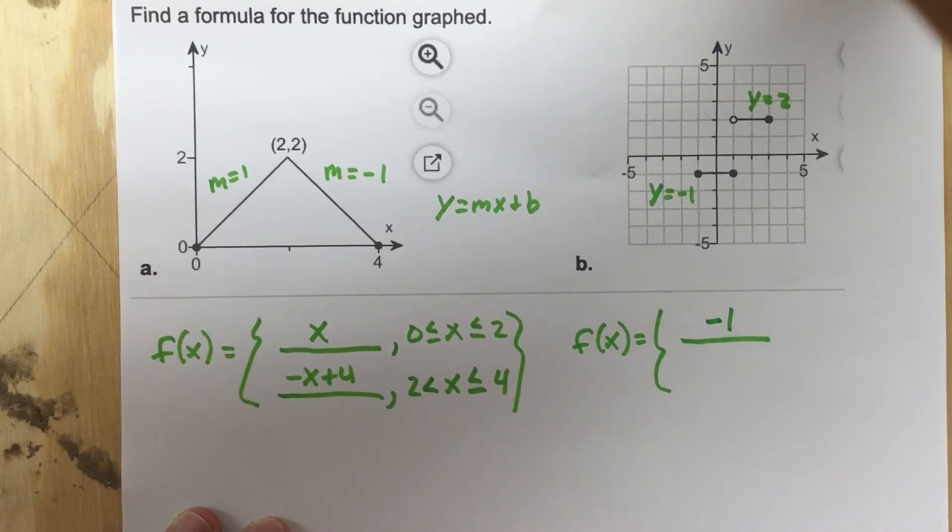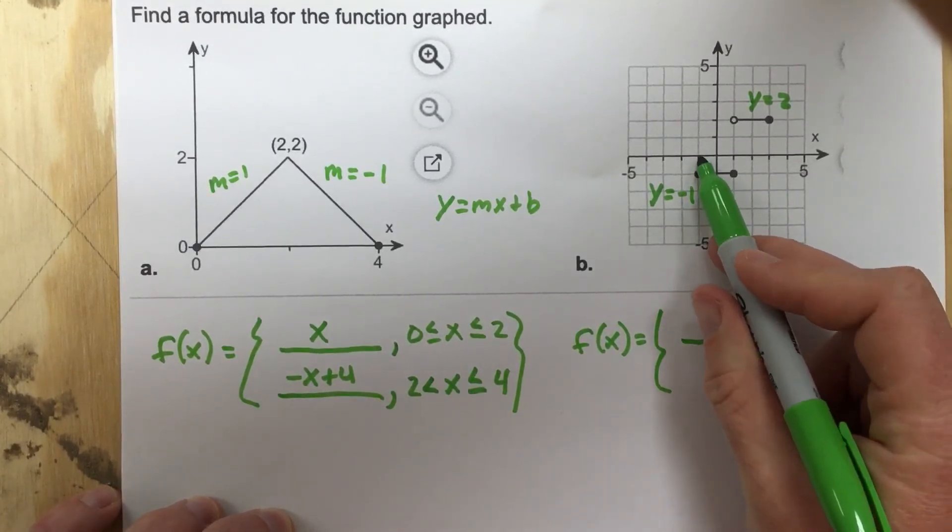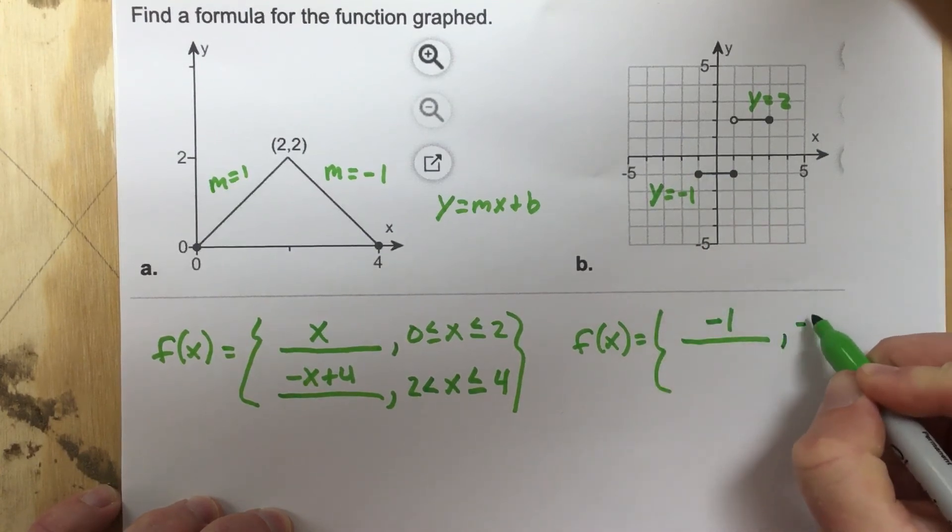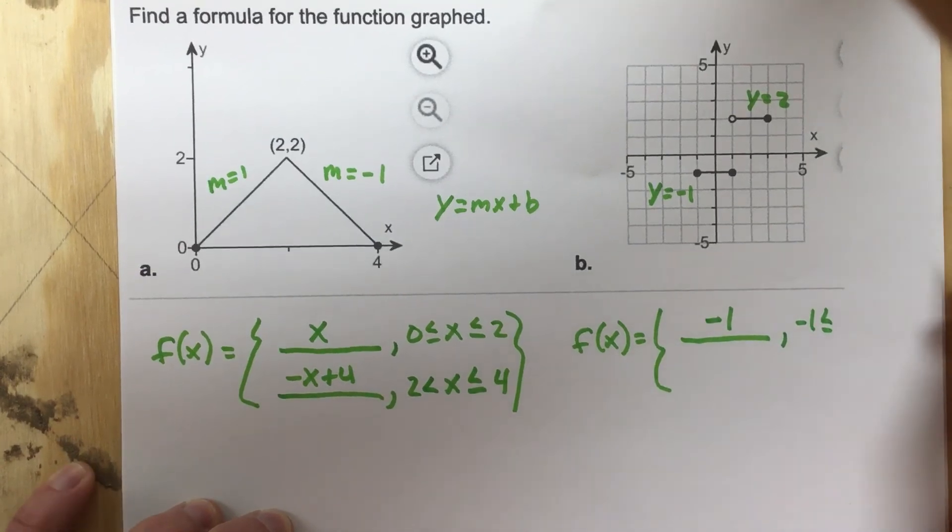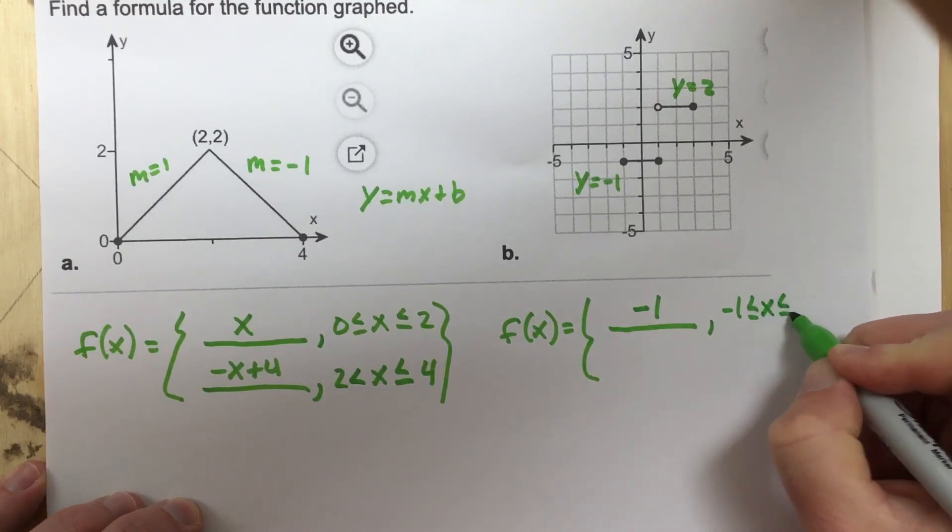So negative 1 is our function. It's going to be negative 1 from negative 1 x value to 1 x value, including both. So we're going to say from negative 1 less than or equal to x less than or equal to 1.